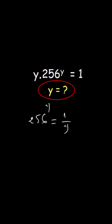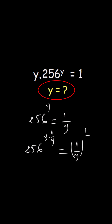Next, I will raise both sides to 1 over y. So we will get 256 to the power of y times 1 over y equals 1 over y to the power of 1 over y. I will eliminate y with y, and I will get 256 on the left side and 1 over y to the power of 1 over y on the right side.